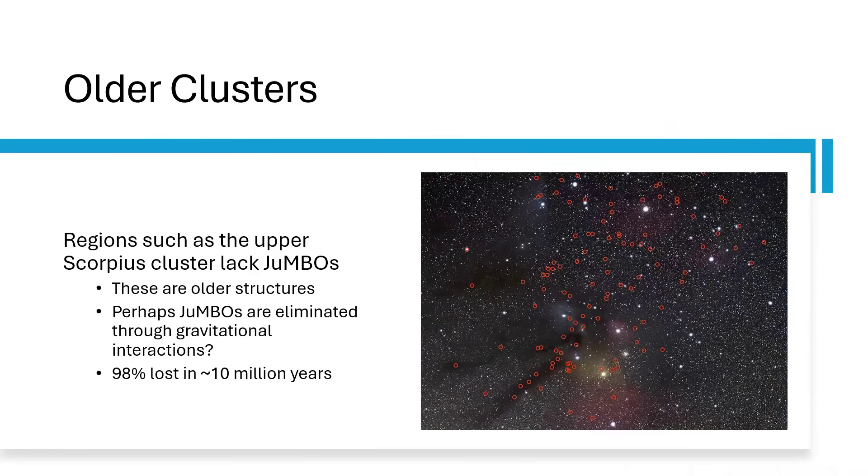Now what's interesting is that when we look at other clusters, such as the Upper Scorpius cluster region just above the star clouds in Ophiuchus there, all of those individual little red circles, those are free-floating rogue planets, Jupiter mass planets that have been found, but we couldn't find any of them being jumbos, no binaries. Now this particular cluster is considerably older than the Orion nebula where the jumbos were found.